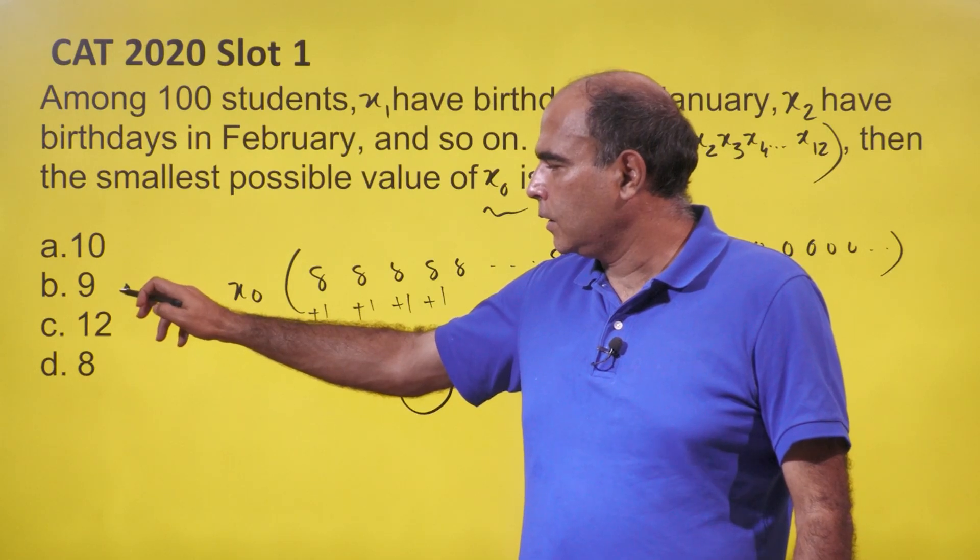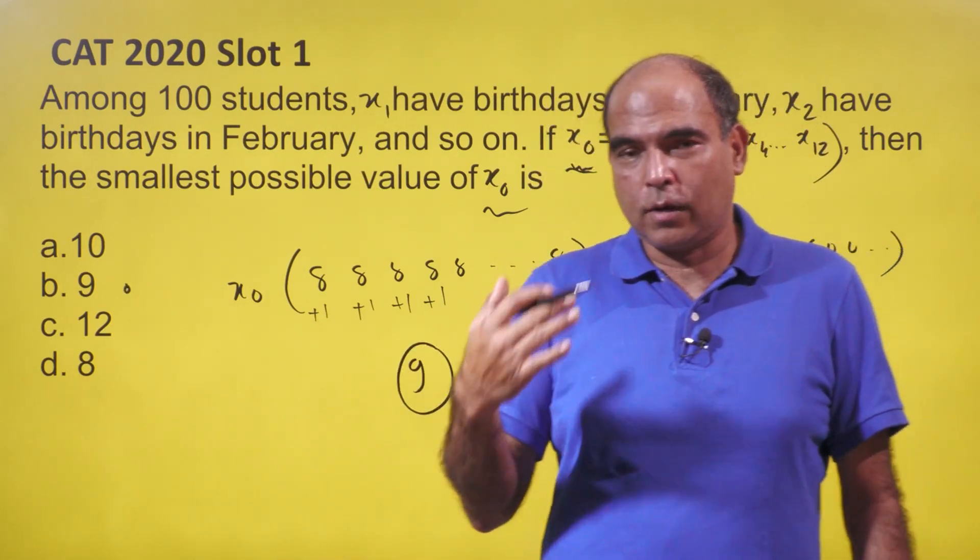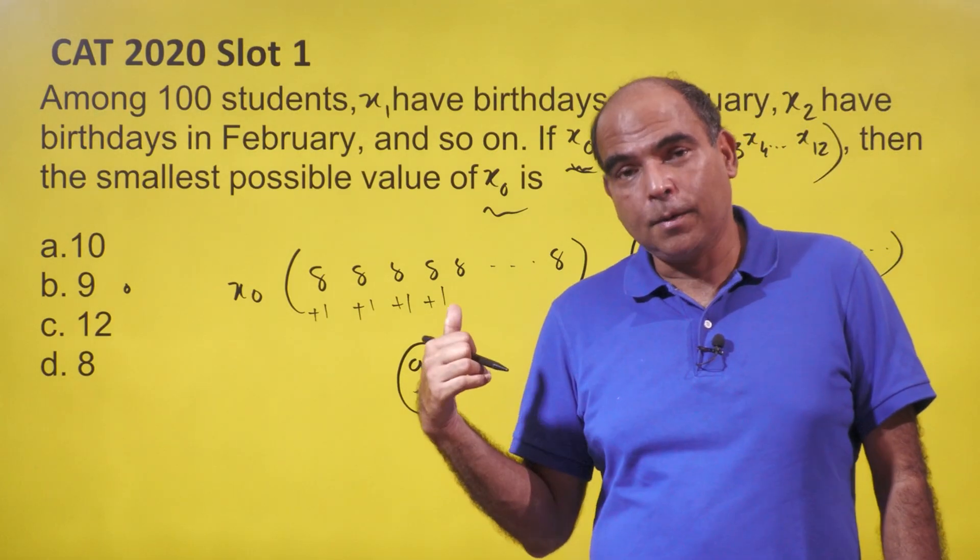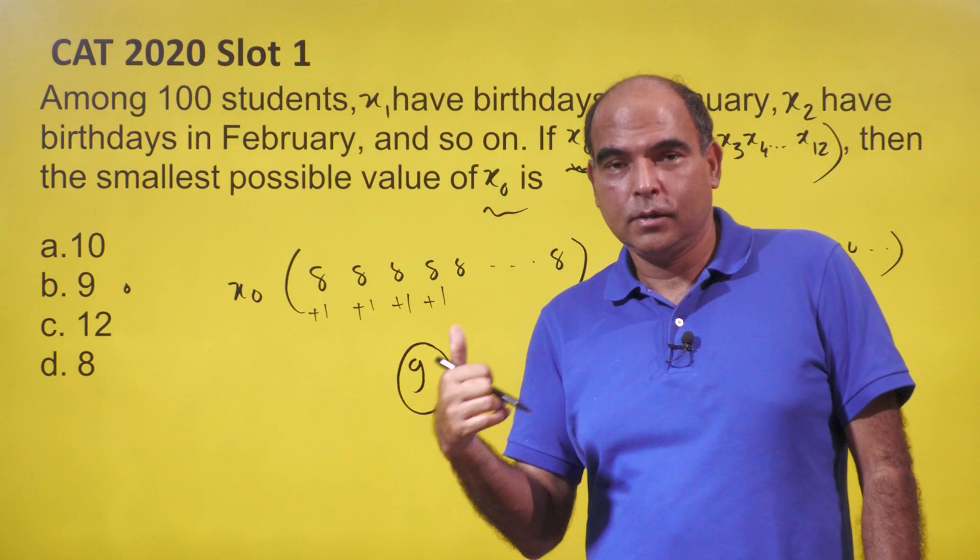Hence, the correct answer is b (9). That's the only thought - almost no calculation work, almost no pen work. You just had to know this principle to get the three marks in CAT. Do follow me for more. Thank you so much!